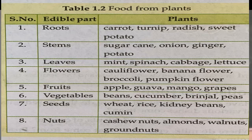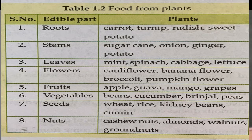There are different plants such as wheat, rice, kidney beans, and cumin. From these plants we get edible seeds — that is the edible part called seeds which can be eaten. If we take wheat, we can get wheat flour and we can eat chapati. Rice is also a seed from which we can make different food items. They are the seeds.